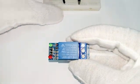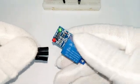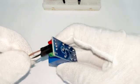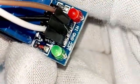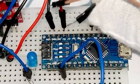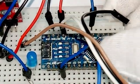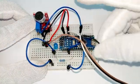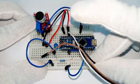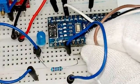This is 1 channel 5V relay module. The VCC of relay module is connected to 5V of Arduino Nano. Connect the GND of relay module to GND of Arduino Nano.